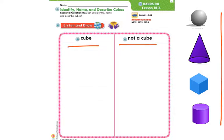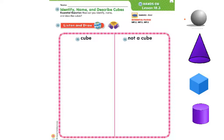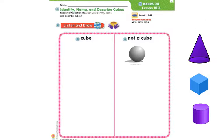Let's start with the very first shape. Is this a cube? Let's see — I have a shape that has curves. Is that a cube? Well, a cube has flat surfaces, not curves. So this is not a cube. This is a sphere.